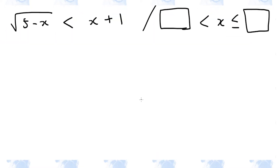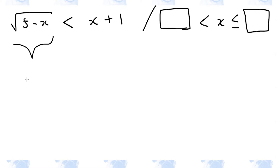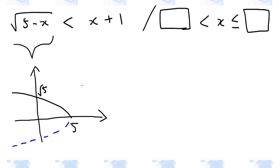In this question, we need to solve this inequality. First of all, let's try to visualize what is happening. Let's start by drawing a quick sketch of the left-hand side of this inequality. The graph of root(5 minus x) looks like this — it is basically half a parabola tilted 90 degrees anticlockwise.